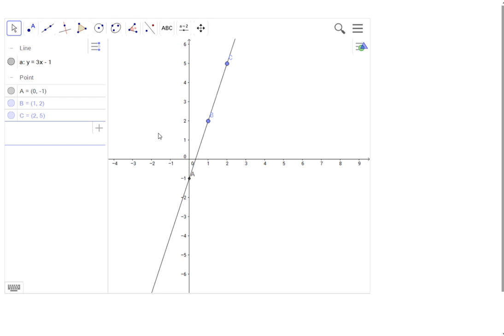So you've got your 0 minus 1, 1, 2, 2, 5. It actually is the straight line graph with the equation y equals 3x minus 1 and the nth term we had 3n minus 1.